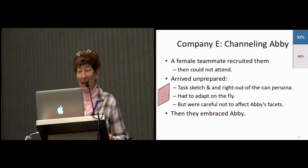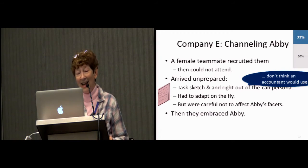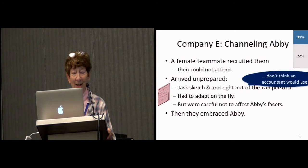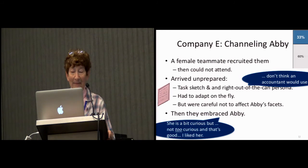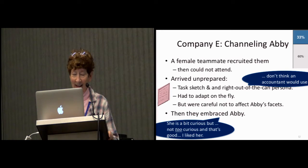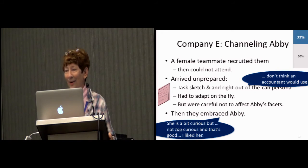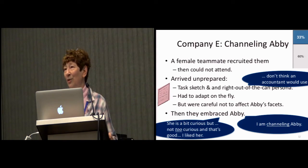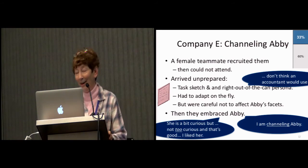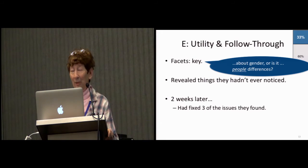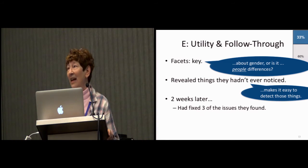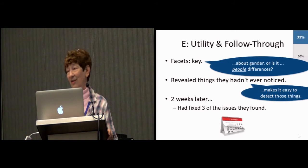Company E: a female teammate recruited it, then they couldn't attend, and the team arrived unprepared. Sounds like a recipe for disaster, but actually it wasn't. They quickly turned themselves around and began to embrace Abby — this was machine learning software. They started saying, 'She's a bit curious, but not too curious, and that's good. I like her.' Another said, 'I am channeling Abby — and I do not like this software,' talking about his own software. Company E also discovered, without our help, that the facets were the key — it's not about gender, it's about people differences. It revealed things they'd never noticed before. They said, 'Once you use this, it makes it easy to detect these things. It entered into their intuition.' Two weeks later, they'd fixed three of the issues they found.